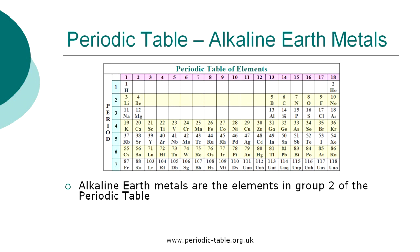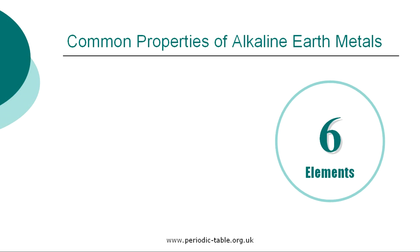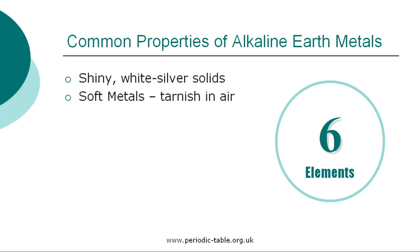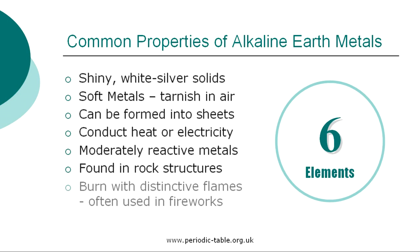The six elements classified as alkaline earth metals are in group two of the periodic table: beryllium, magnesium, calcium, strontium, barium, and radon. The alkaline earth metals are shiny silver-white colored solid metals that are seen to tarnish in air. They are soft metals although they are harder and denser than the alkali metals. These metals conduct heat or electricity and can be formed into sheets. Elements classified as alkaline earth metals are all found in the earth's crust but not in element form, as they are moderately reactive with other substances — instead they are widely distributed in rock structures. The alkaline earth metals all burn in air and glow with characteristic colors when heated, which explains why they are used in fireworks.